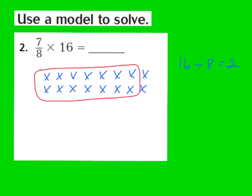Now our next step is to count the number of circled X's. We have 1, 2, 3, 4, 5, 6, 7, 8, 9, 10, 11, 12, 13, 14 circled X's. So that tells us 7/8ths times 16 is going to equal the whole number 14. So 14 becomes our answer.